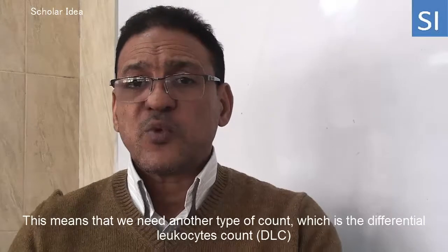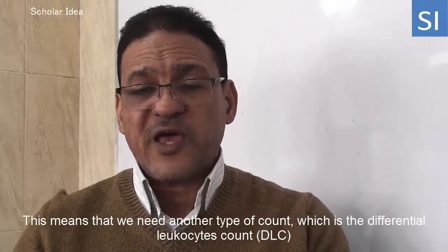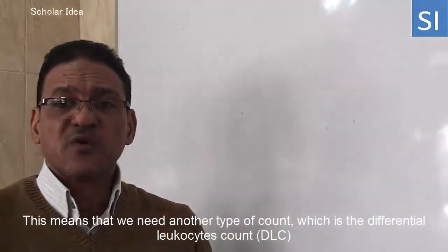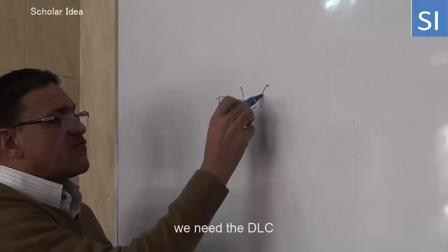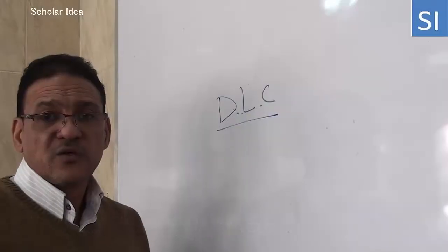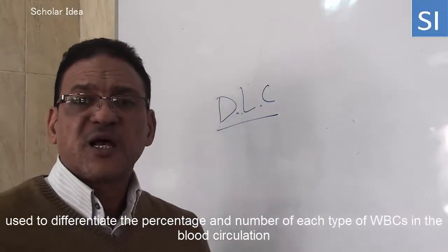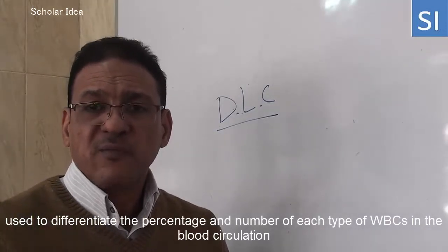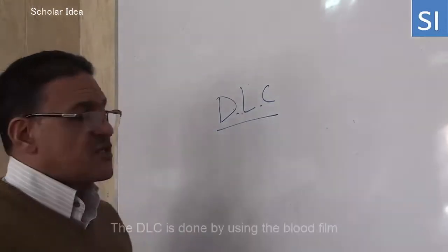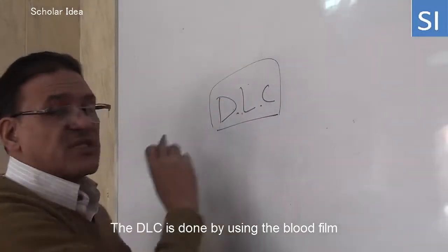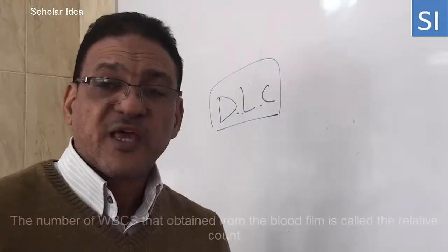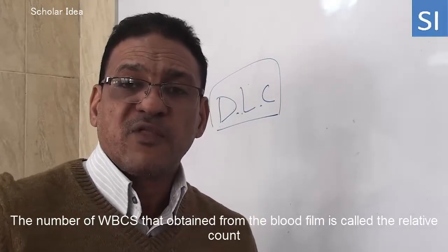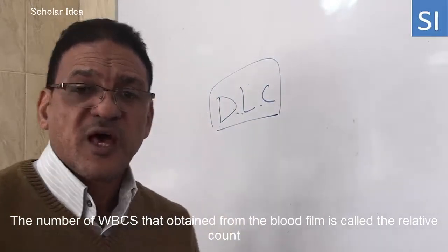This means that we need another type of count, which is the differential leukocyte count. We use the differential leukocyte count to differentiate the percentage and the number of each type of white blood cells in the blood circulation. The differential leukocyte count is done by using the blood film, and the count obtained from the blood film is called the relative count.